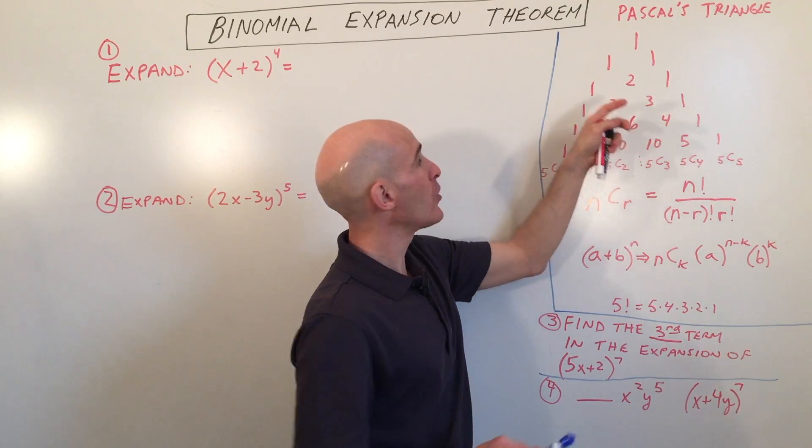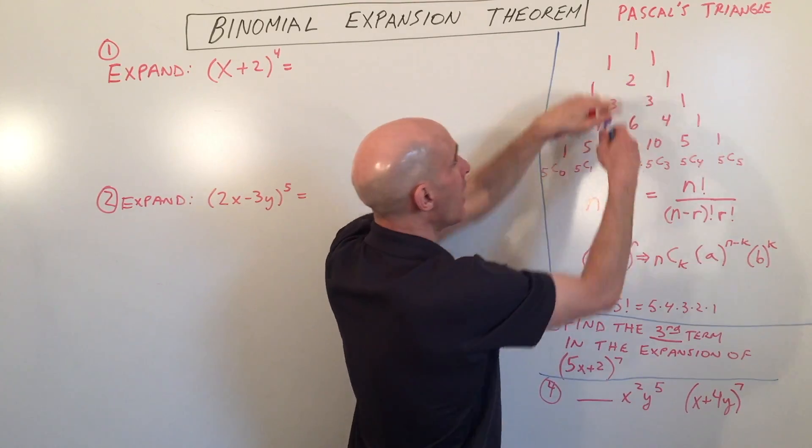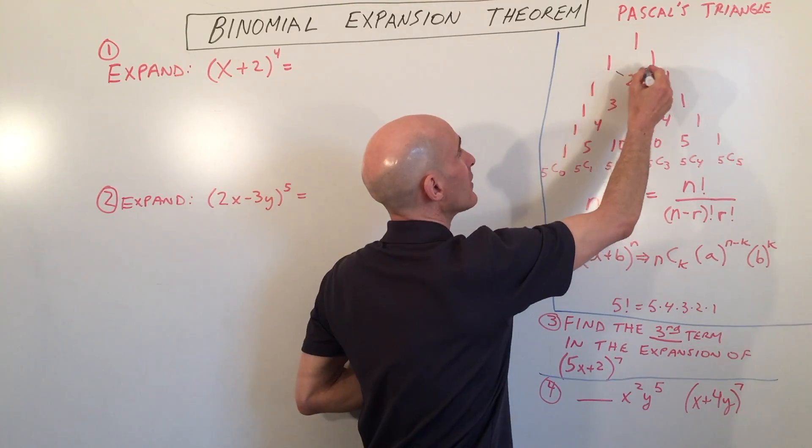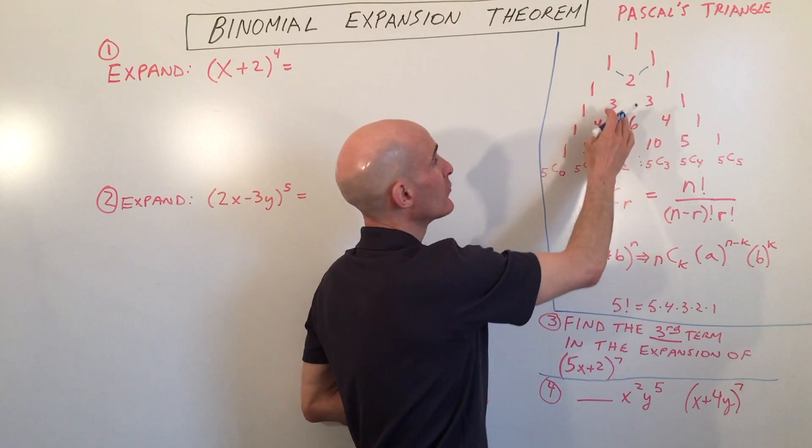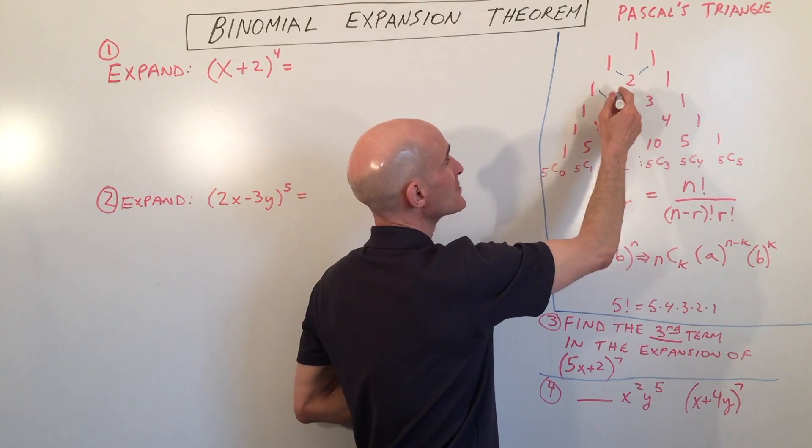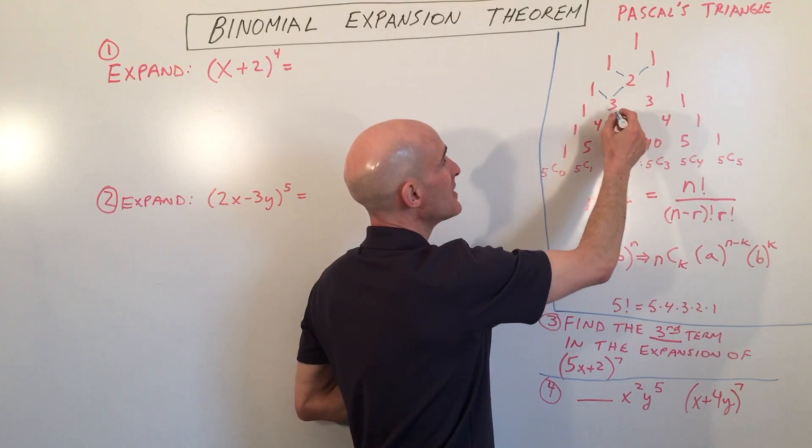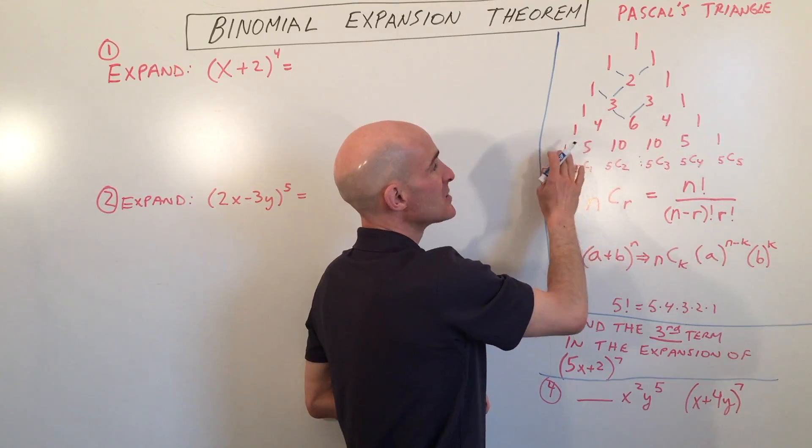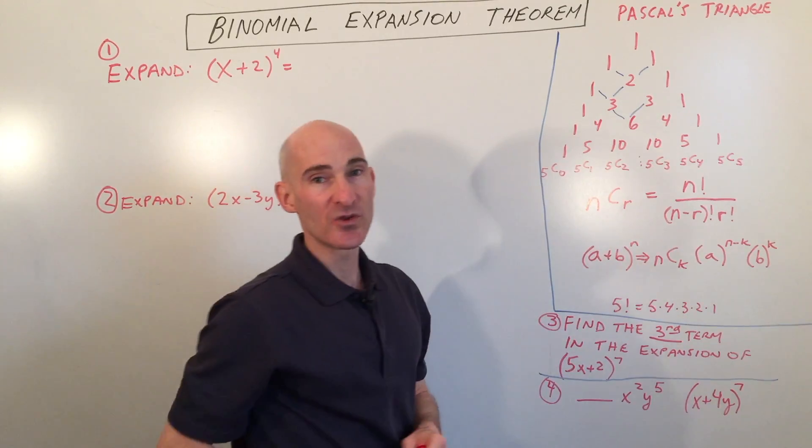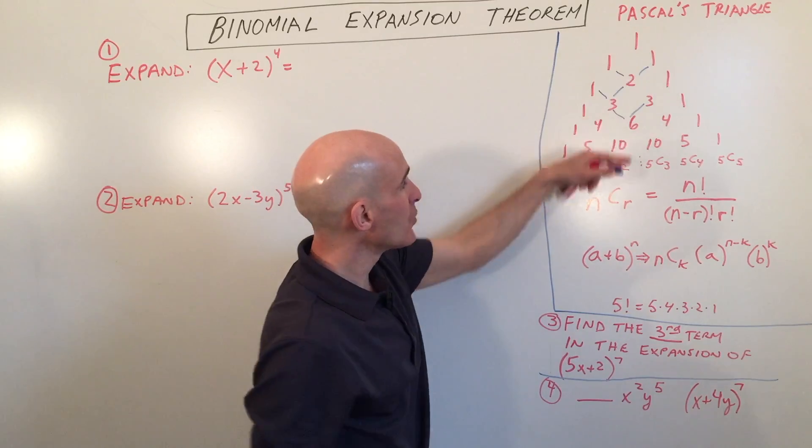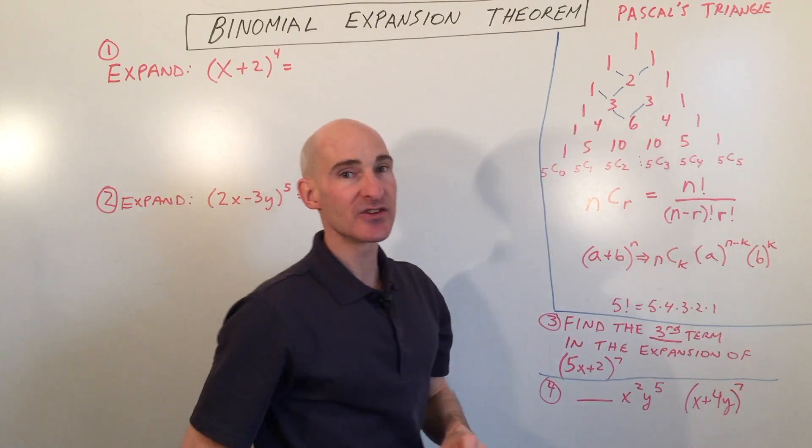Each successive row, what we do is we add the two terms above, like so. 1 plus 1 is 2. If we want to get this term here, we add the two terms above, 1 plus 2 is 3 and so on, 3 plus 3 is 6. So it always starts with 1 and ends with 1. And you can keep going. This will keep expanding out, Pascal's Triangle.